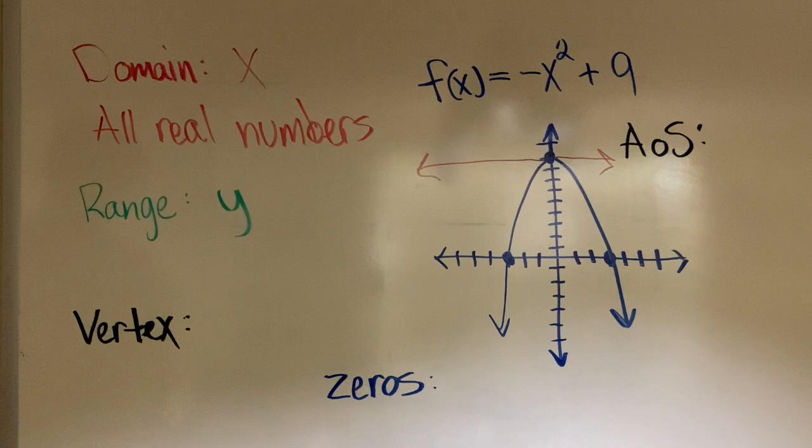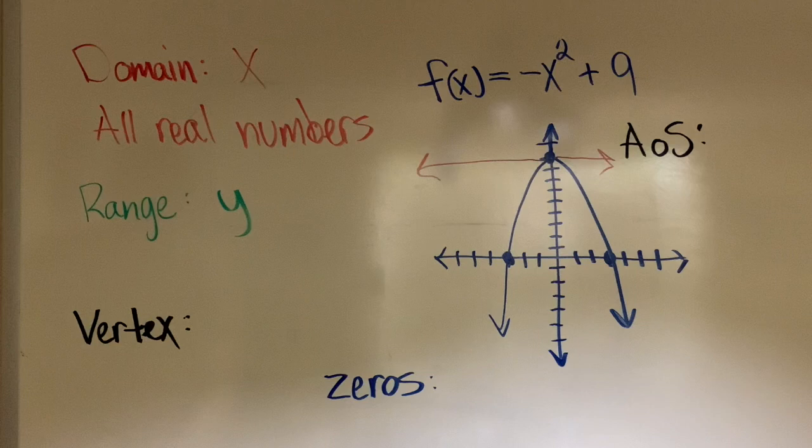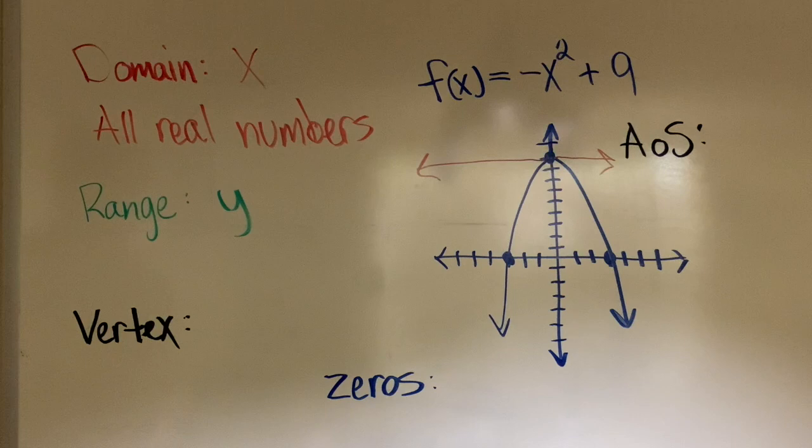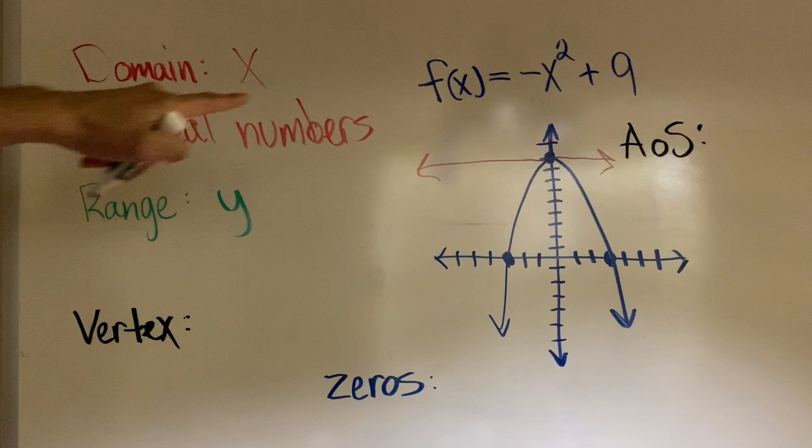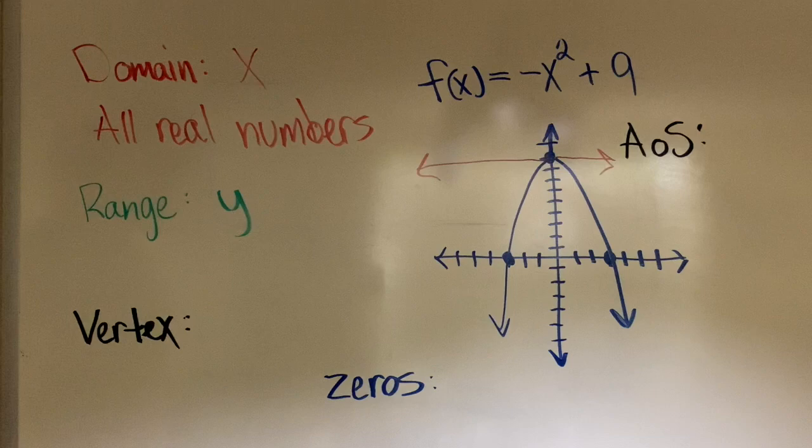So if you have a multiple choice question and one of the answer choices includes an x, that would not be the range. You can always eliminate those answer choices. For the range, we're going to be looking at the highest point and the lowest point. The highest point is up here at 9. The lowest point, there is no lowest point.